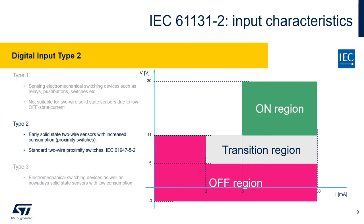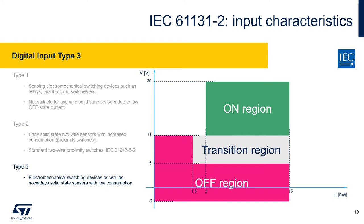Now you can clearly see the difference. Type 2 shifts the current threshold for all the regions to higher levels. The transition region starts at 2mA and the on-region even at 6mA, while decreasing the voltage threshold for the on-region down to 11V. All of this permits higher leakage current for the external switching device in the off-state, and higher voltage drop across the switching device in the on-state to ensure its proper supply. That's why this type perfectly fits two-wire proximity switches. Type 3 is a kind of good compromise between the other two — quite universal, supporting electromechanical switching elements as well as modern two-wire sensors with limited power consumption.